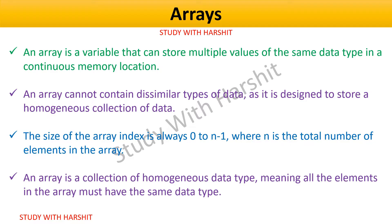An array cannot contain dissimilar types of data, as it is designed to store a homogeneous collection of data. In an array, all the elements must be of the same data type, such as integer, floating point, characters, or boolean values.